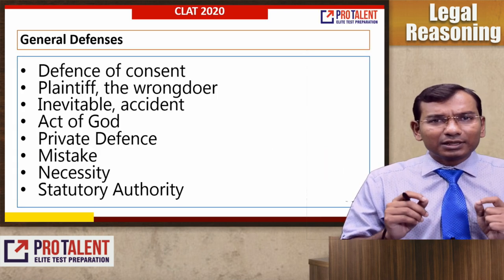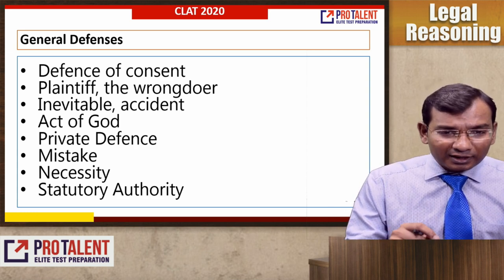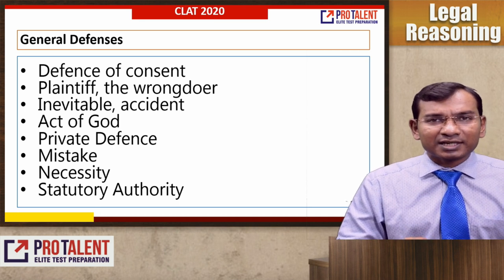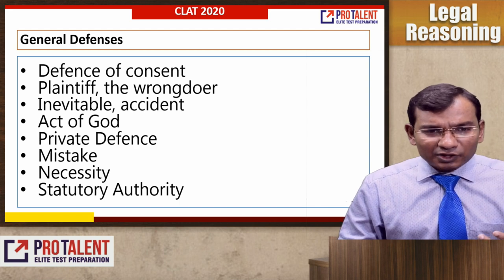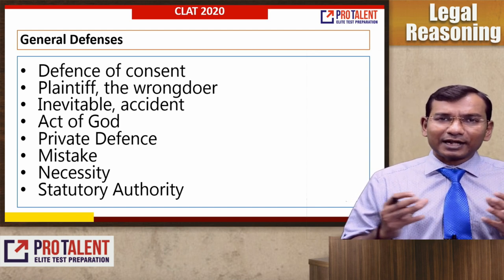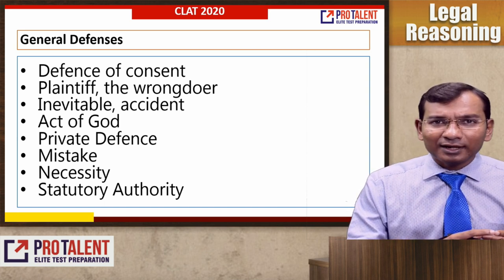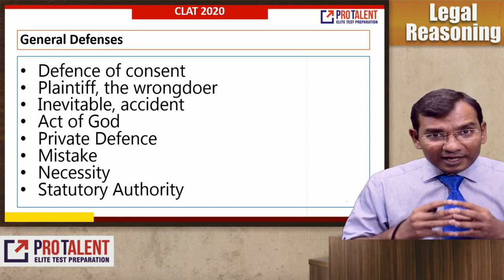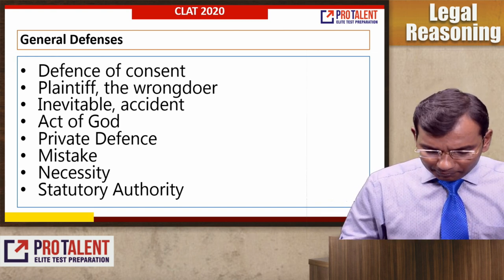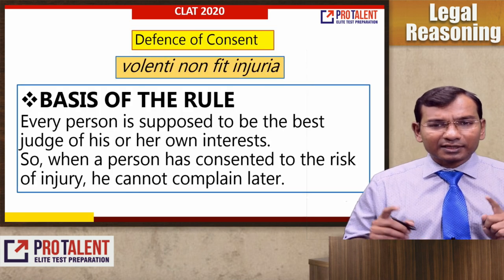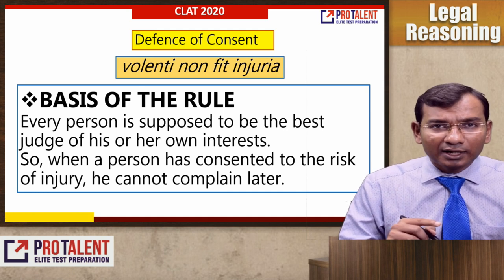What are the defenses available? When someone commits a wrong and a tort occurs, but if any of these reasons apply — defense of consent, plaintiff is a wrongdoer, inevitable accident, act of God — then these defenses will be available. We will discuss on what basis these defenses are available. The first is defense of consent, which is called Volenti Non Fit Injuria.